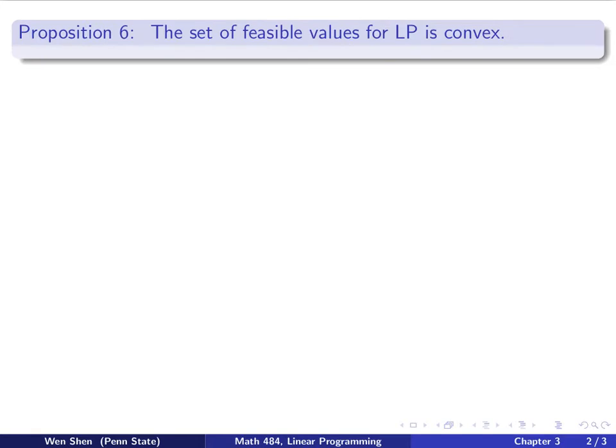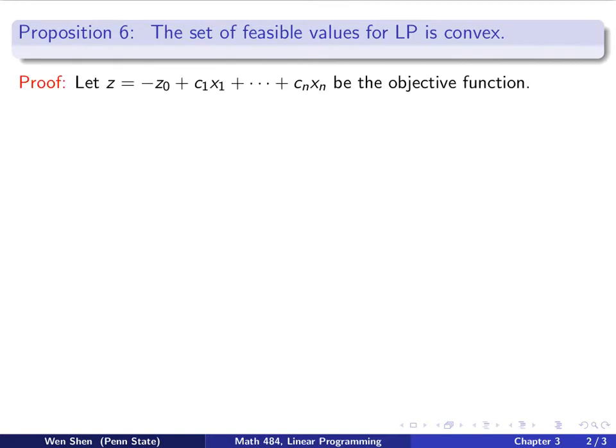Now we have Proposition 6, which says that the set of feasible values for linear programming is convex. Let's take a look at how to prove this proposition.